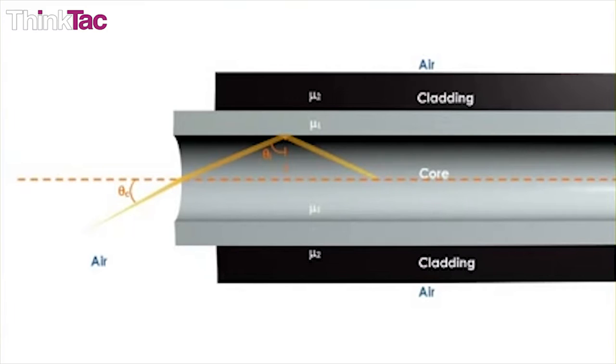For this purpose, the cladding or covering material of the fiber is made of a substance with lower refractive index than the inner core fiber. This is why an optic fiber is very thin so that the angle of incidence by design always remains greater than the critical angle.